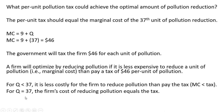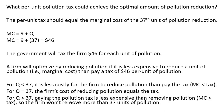When Q equals exactly 37, the firm's cost of reducing pollution equals the tax. And finally, if reducing pollution beyond 37, it doesn't make sense for the firm — it would just be cheaper to pay the tax. So paying the pollution tax is less expensive than removing the 38th, 39th, 40th, or 50th unit of pollution. The firm won't remove more than 37 units of pollution.